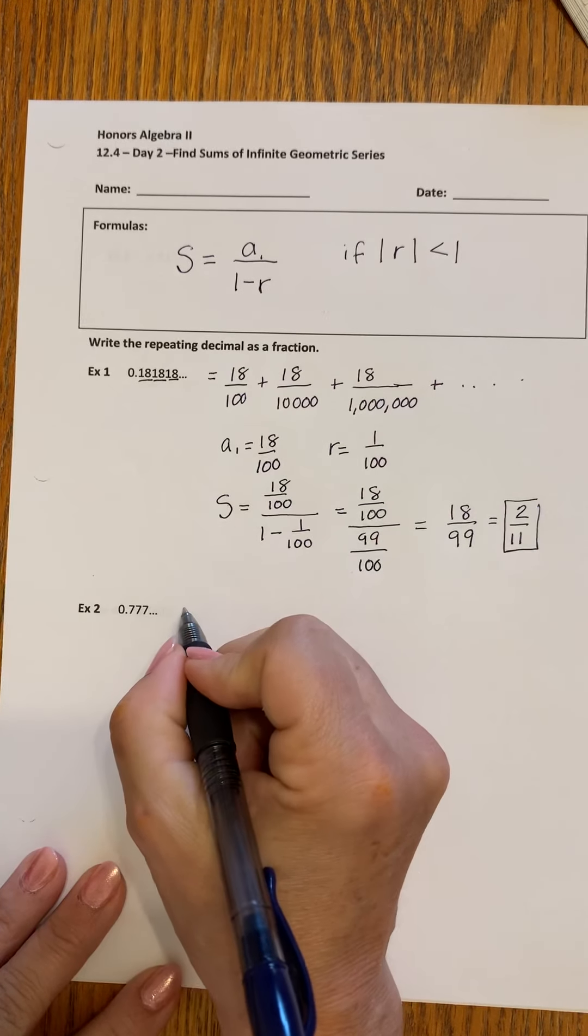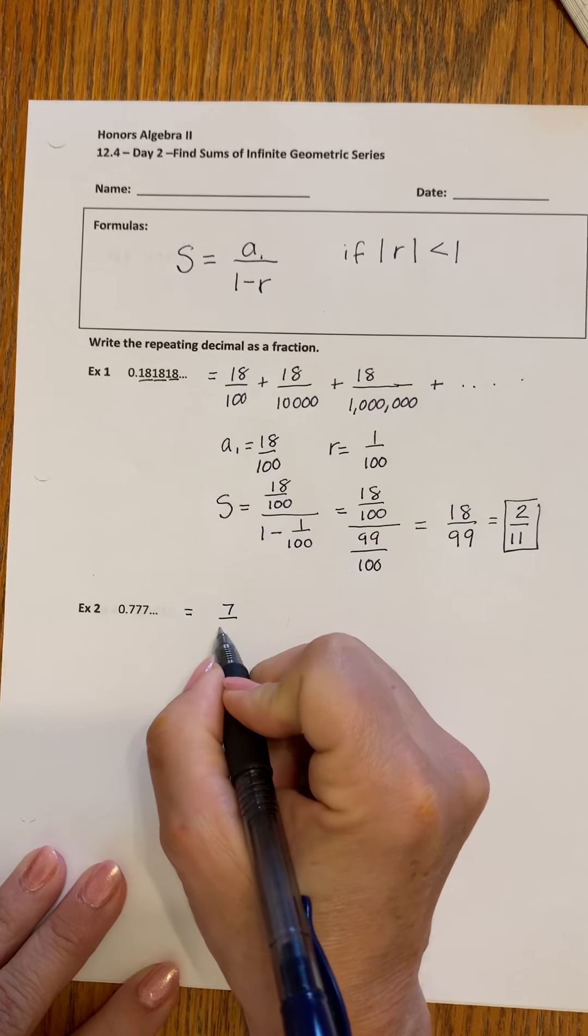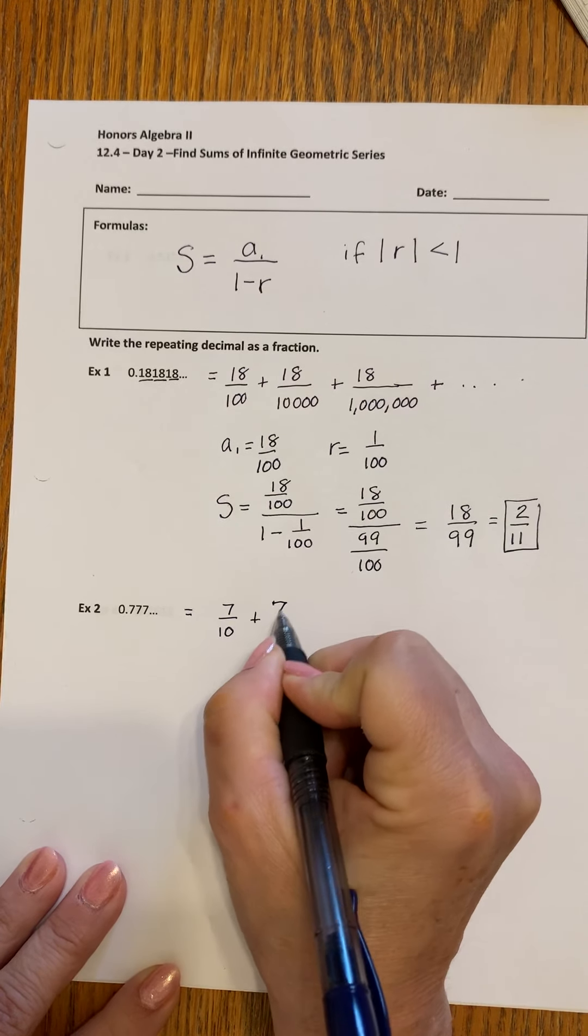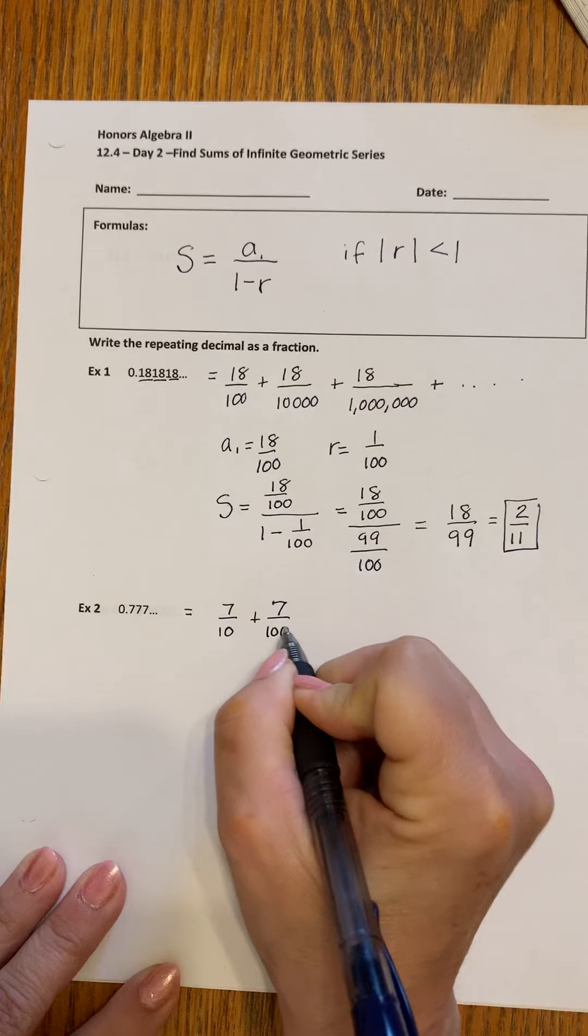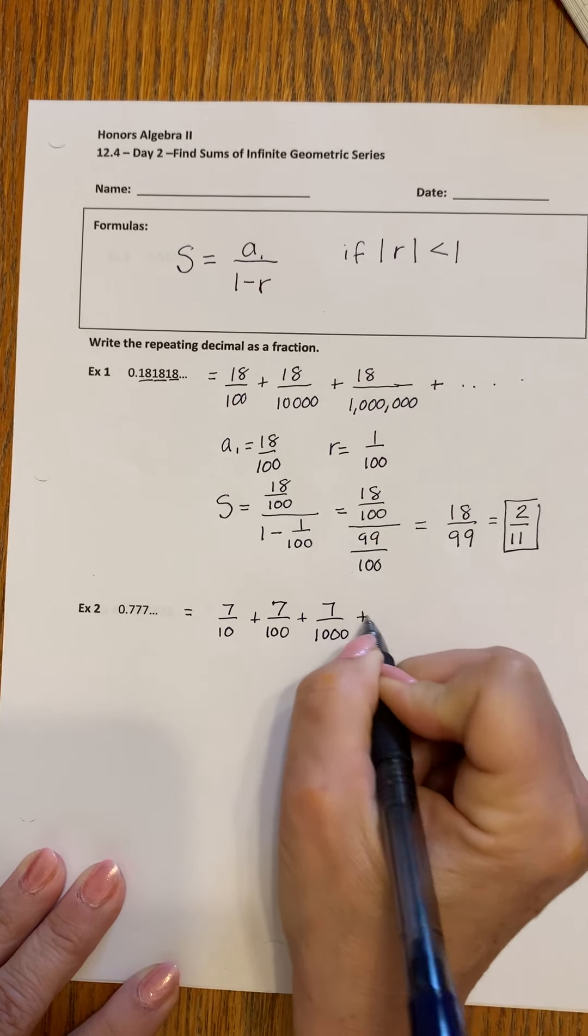So this one, the next one, 0.777, we can write that as 7 tenths plus 7 hundredths plus 7 thousandths. And it goes on forever.